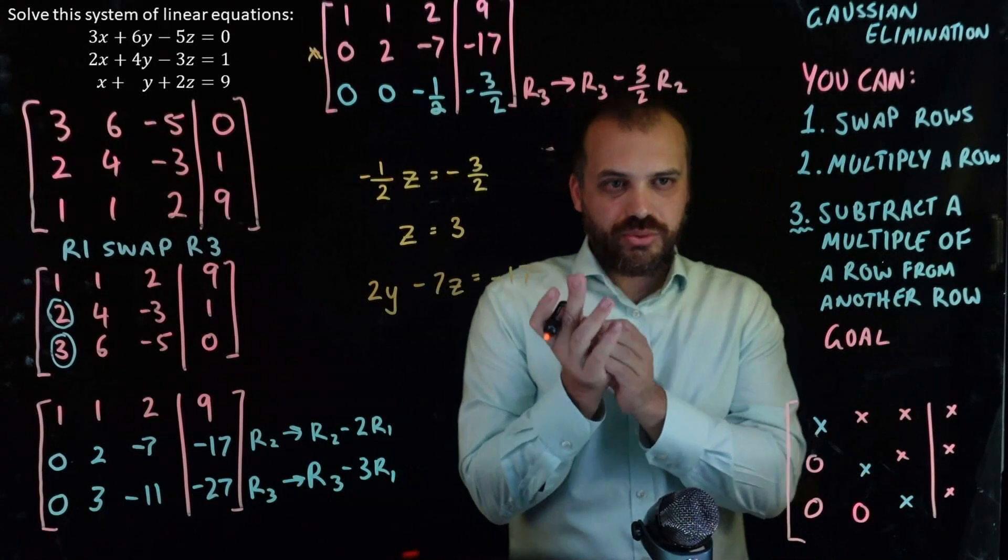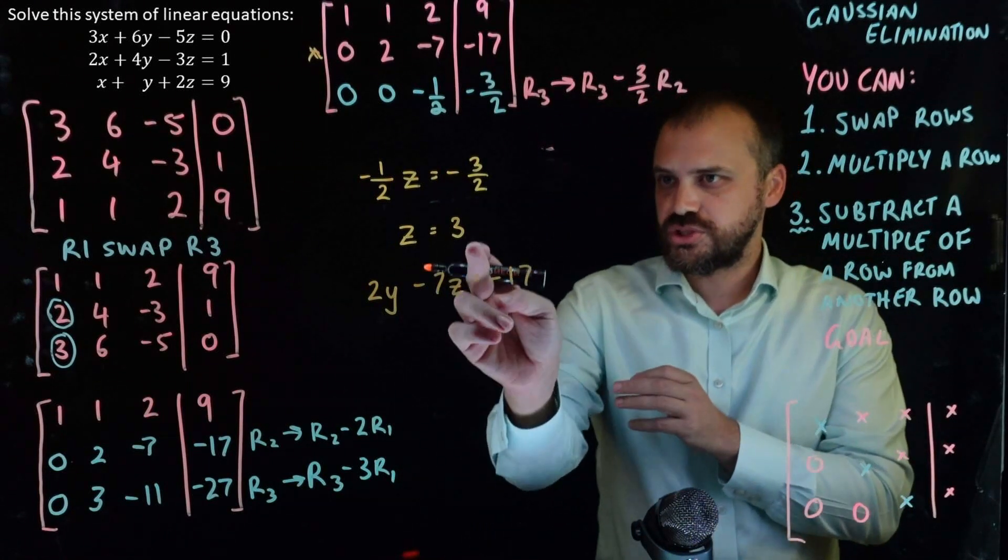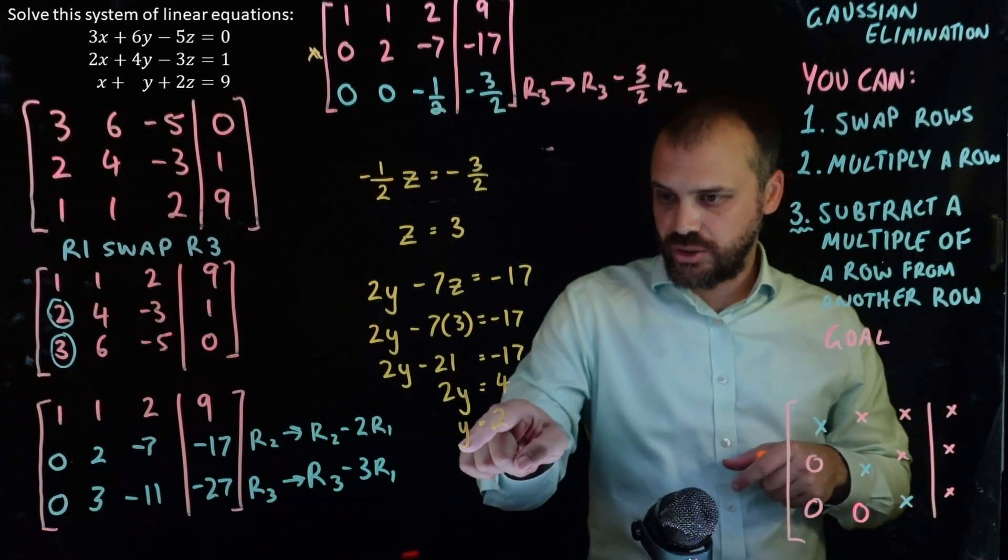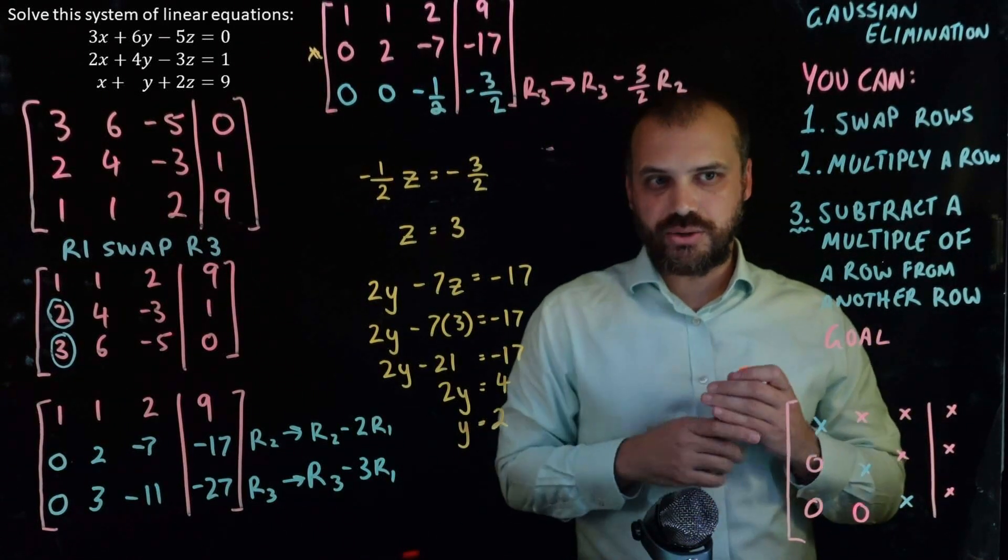But we know what z is. We just solved z. z is 3. And so solving that equation, we get y equals 2.